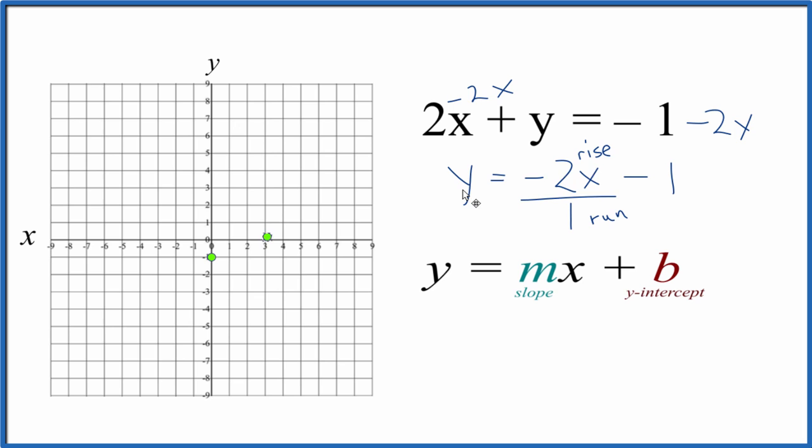We'll go to our y-intercept, and then we rise negative 2 and run 1. So if it was just positive 2, our rise would be up 2. But since it's negative, we're going to rise down 2: 1, 2, and then we run 1.